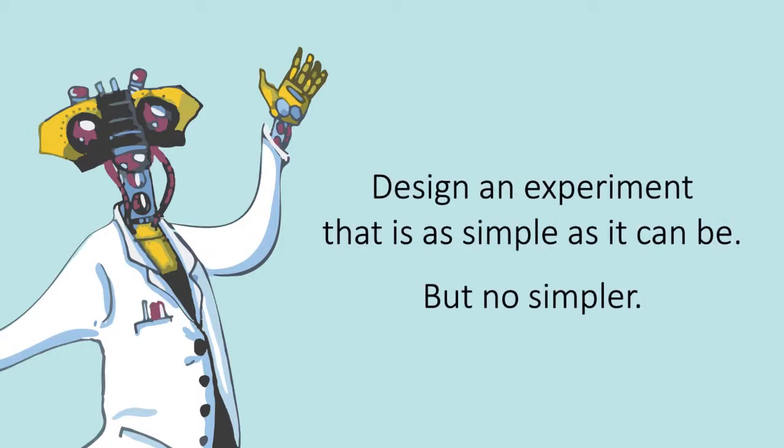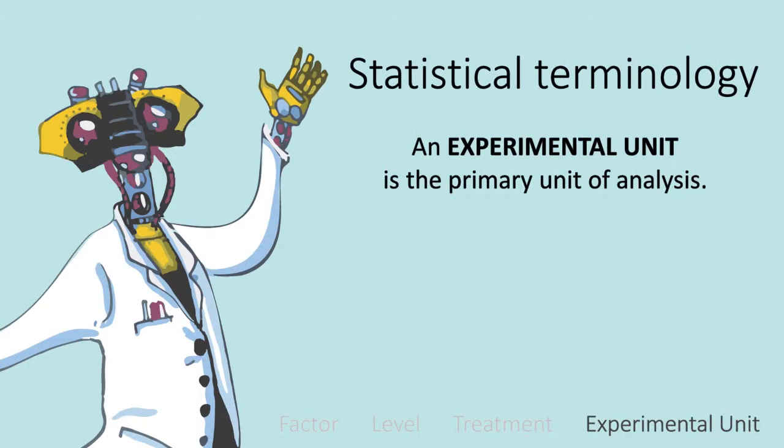What is an experiment? An experimental unit is the primary unit of analysis. This might not sound very well defined because it isn't. You'd be surprised how much time statisticians spend thinking about what exactly is n. It's kind of why we're the life of the party. It also leads us to think about replication at different levels and the related issue of pseudo-replication.